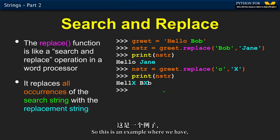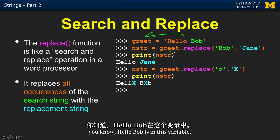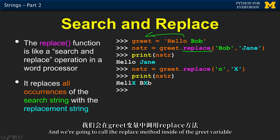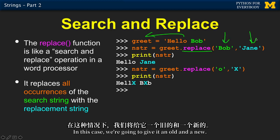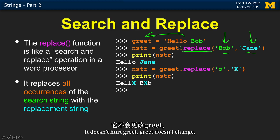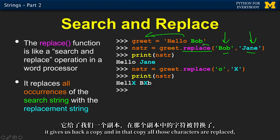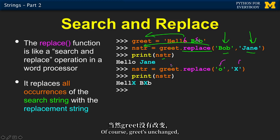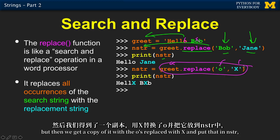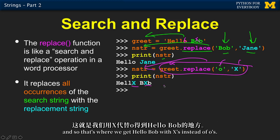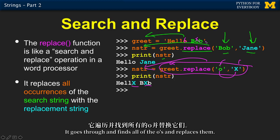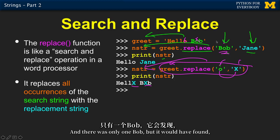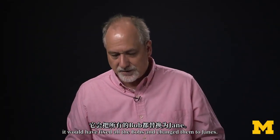Search and replace: if 'Hello Bob' is in the variable greet, we call the replace method with two parameters — old and new. So greet.replace('Bob', 'Jane') finds all Bobs and replaces them with Janes. It doesn't change greet — it gives back a copy with the characters replaced. We can also replace all the o's with x's, and it goes through and replaces every occurrence, giving us 'Hellx Bxb'.